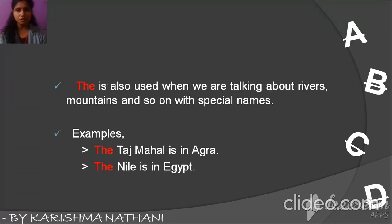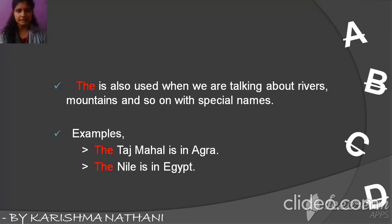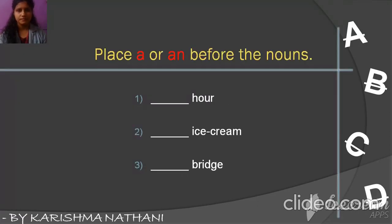THE is also used when we are talking about rivers, mountains, and so on with special names. For example, the Taj Mahal is in Agra — Taj Mahal and Agra are special names, always starting with a capital letter. The Nile is in Egypt — Nile is the name of a river, and Nile and Egypt are special names.